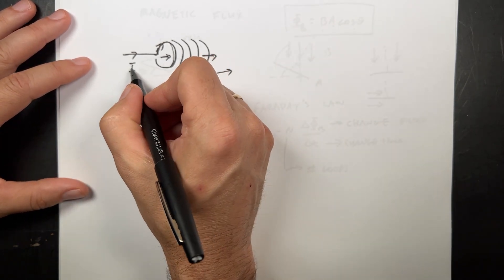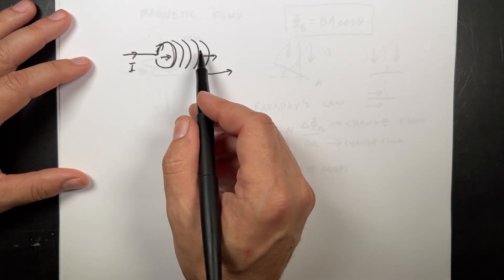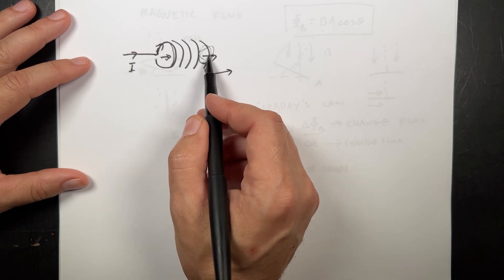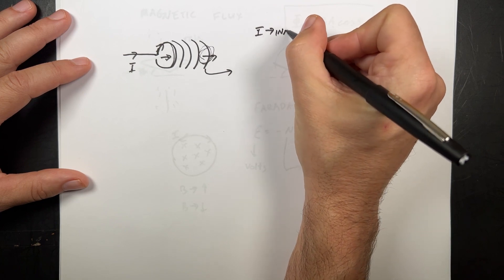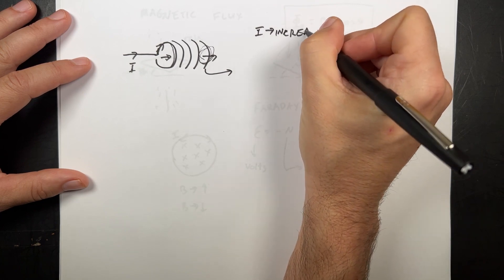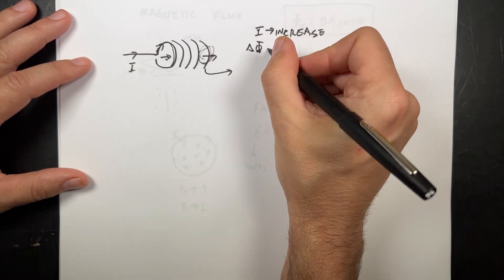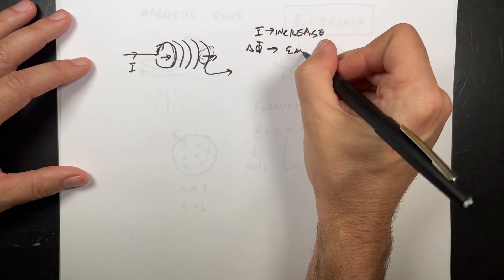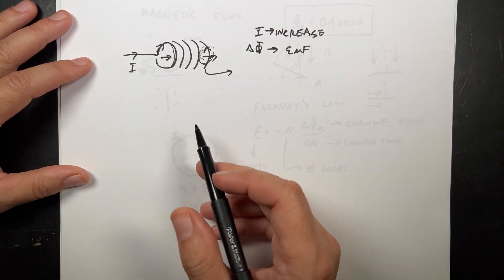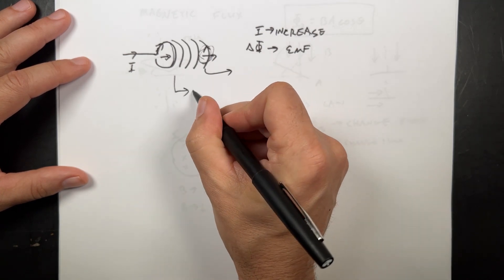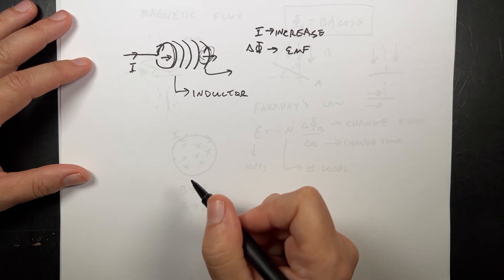Now, what if I increase the current? If I increase the current, that's going to increase the magnetic field, and that's going to increase the magnetic field over here. So I increase the current, it's going to produce a flux, a changing flux, that produces an EMF. But that EMF is going to want to produce a current going the other way. So this is what we call an inductor. It's kind of a big deal.